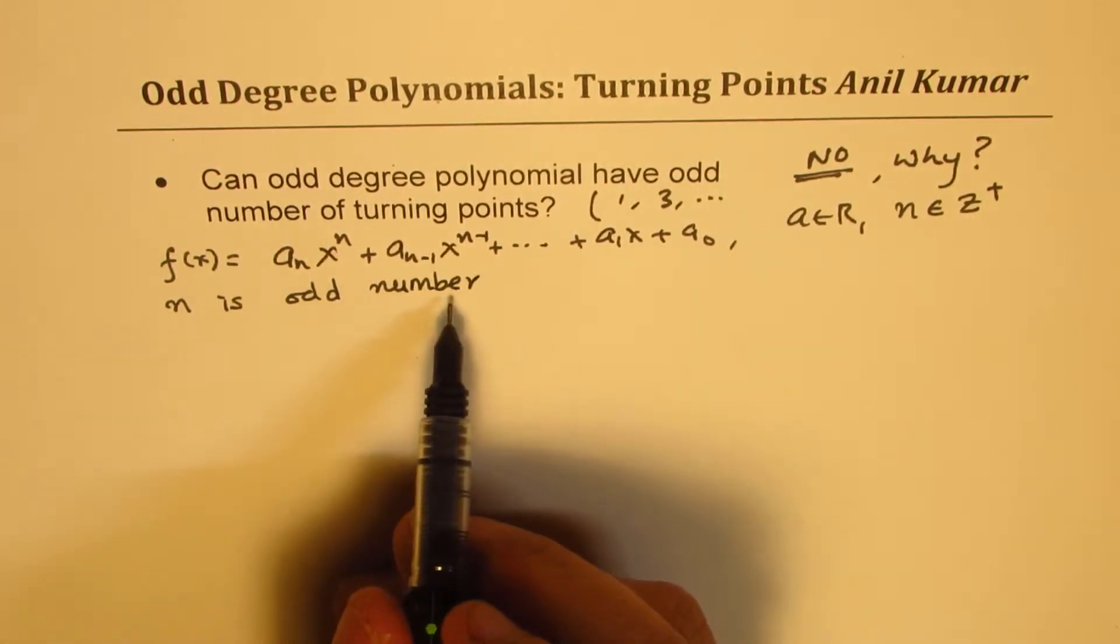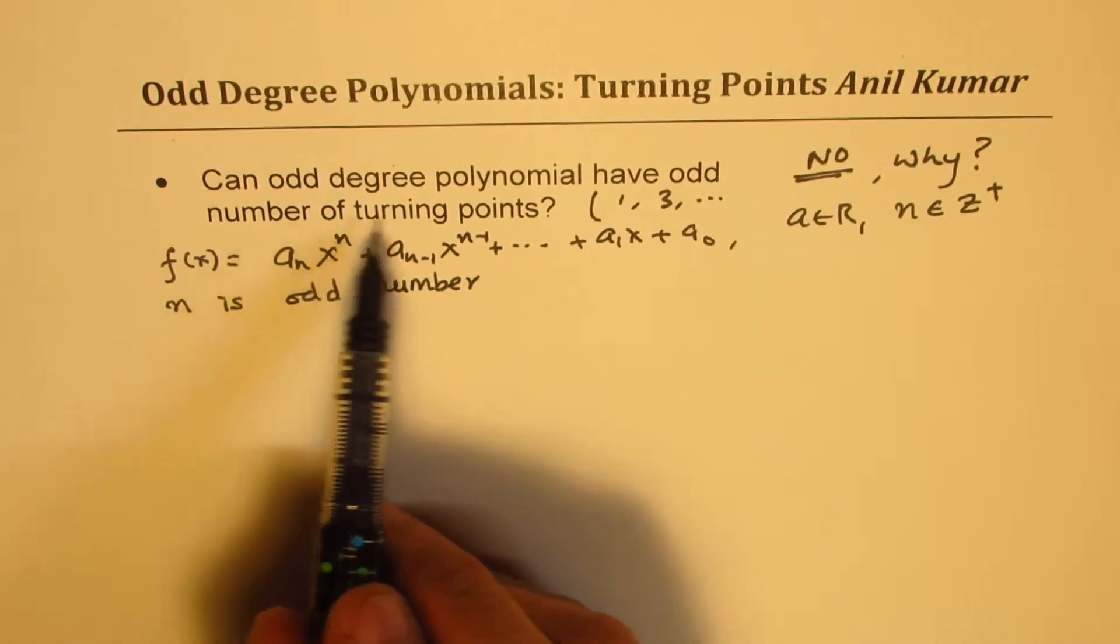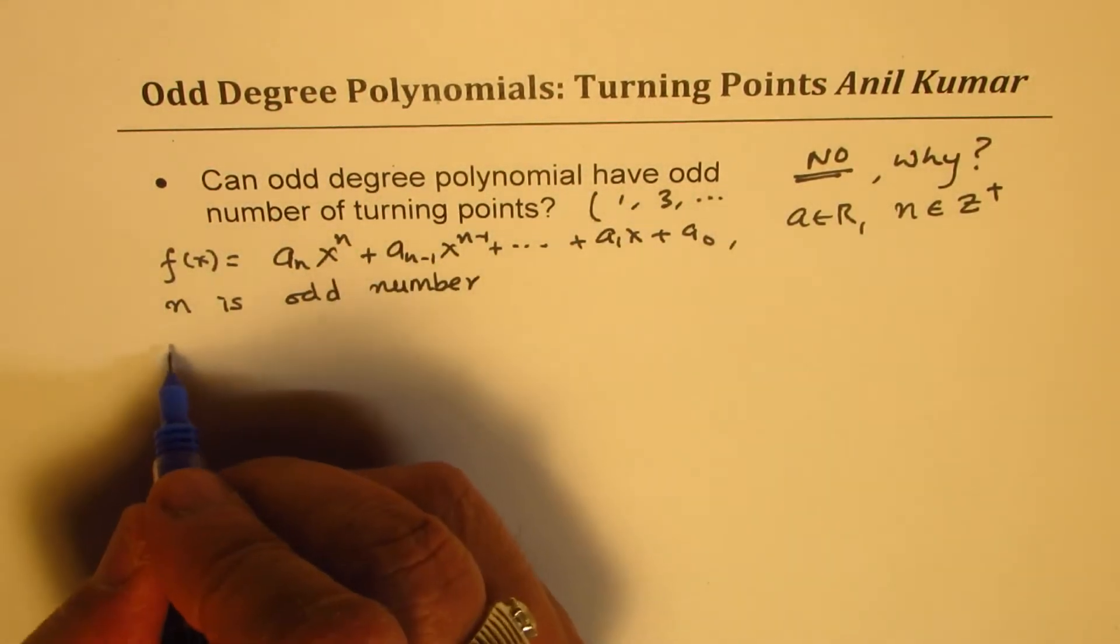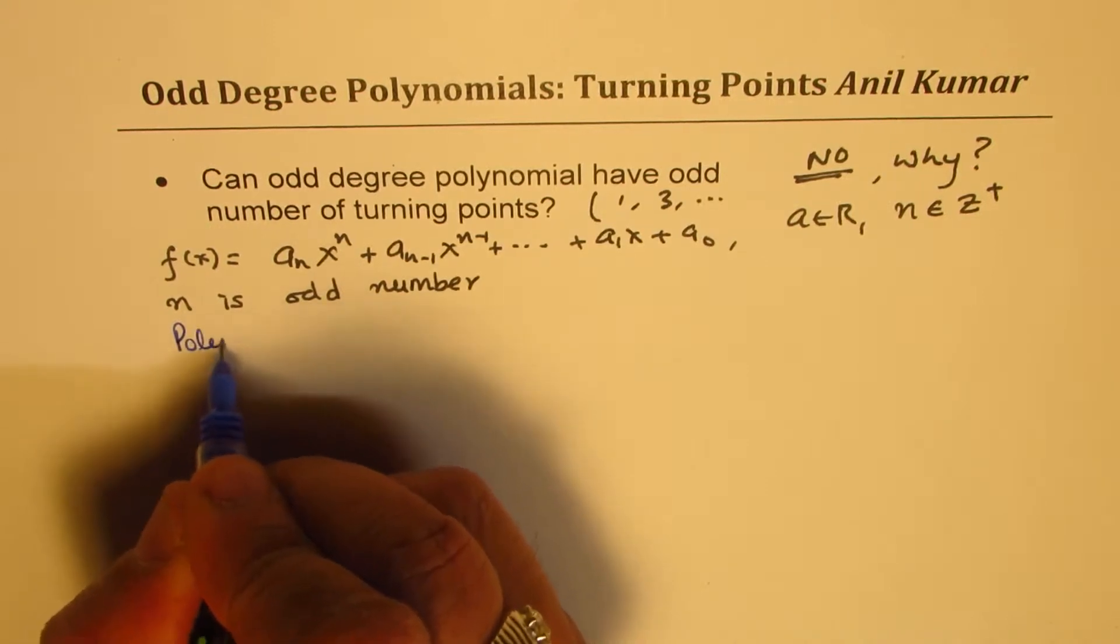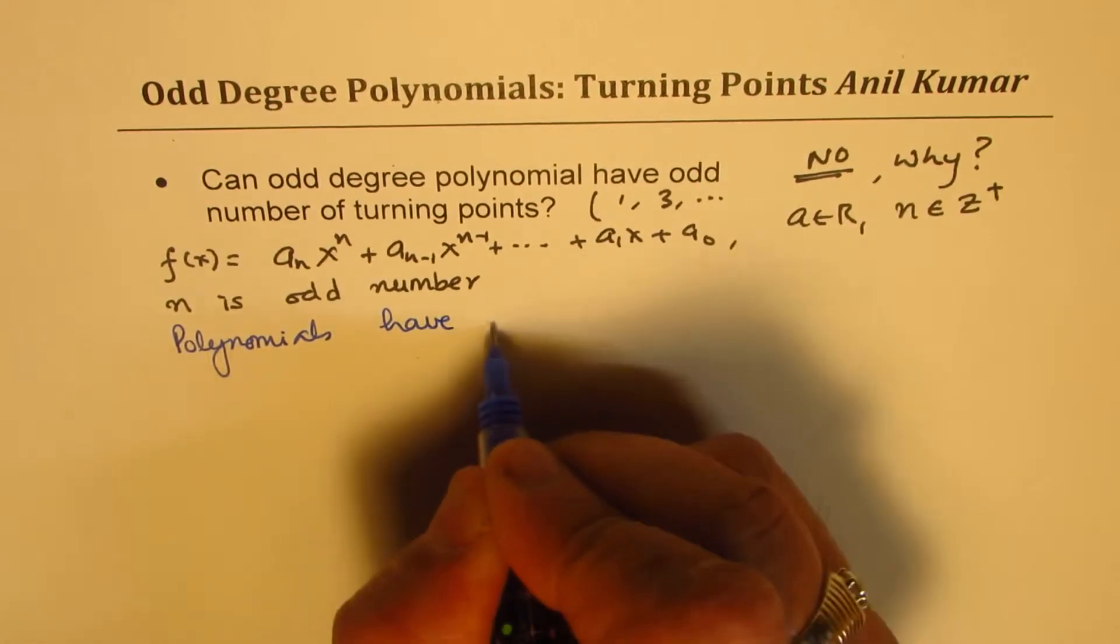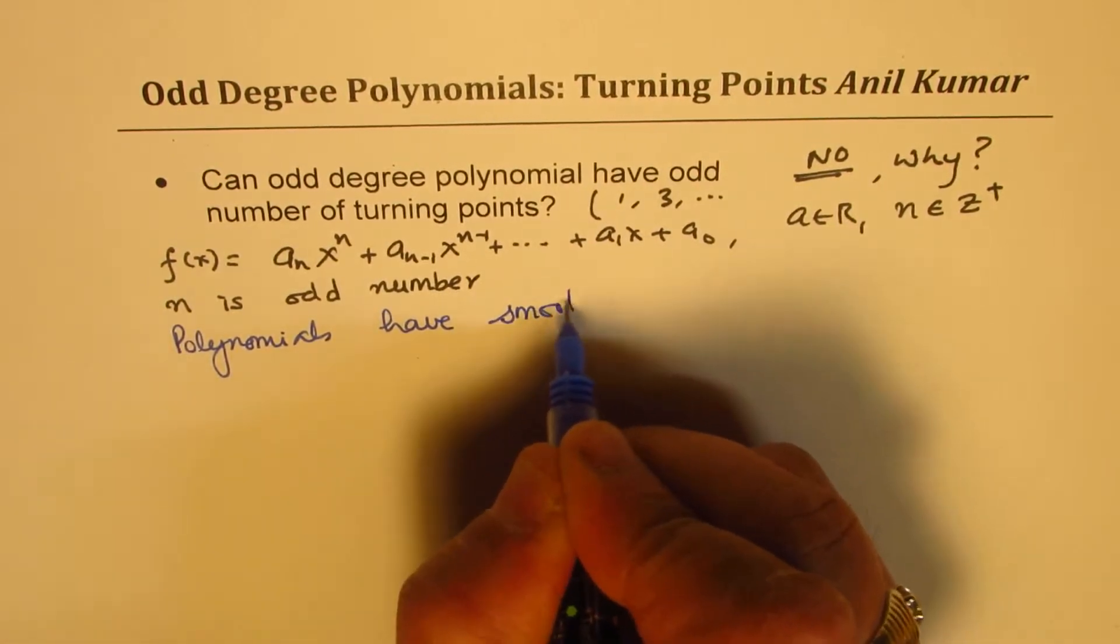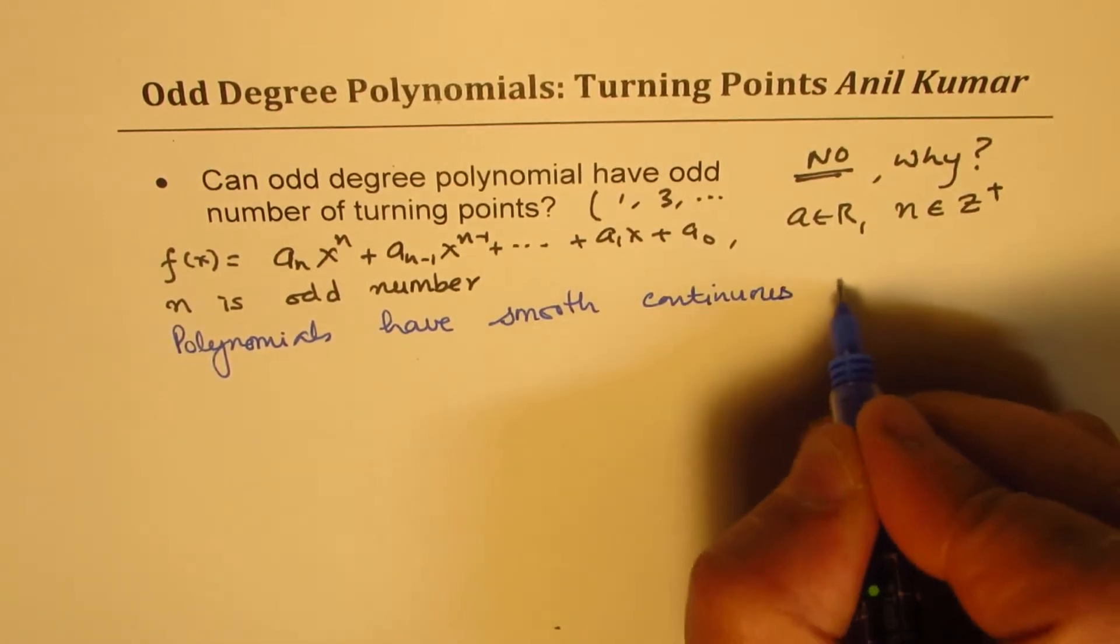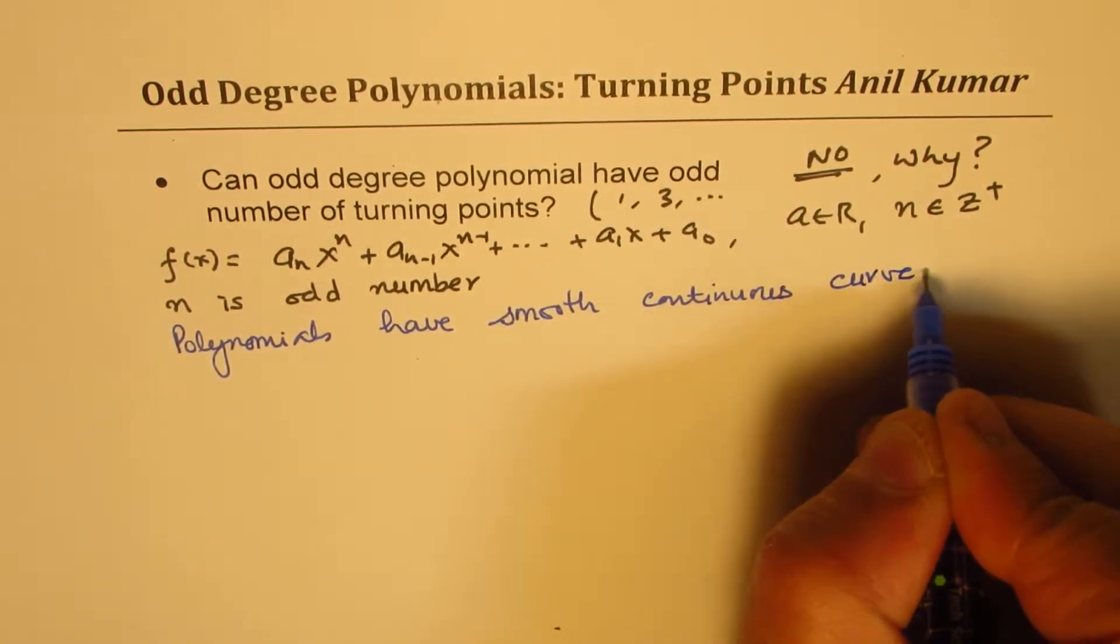So in this case, we are talking about odd degree means n is odd number. So these odd degree polynomials, how many turning points can it have? Can it have odd number of turning points? Now, as you know, polynomials will have a smooth curve. Polynomials have smooth continuous curves.